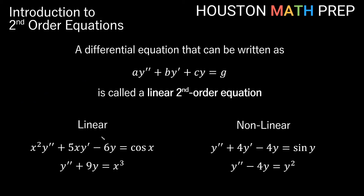Here we have a couple of examples and non-examples of linear second order equations. In the first example, a is x squared, b is 5x, c is negative 6, and g is cosine x — all functions of at most x. In the second example, a is 1, b is actually 0 (no y prime term), c is 9, and g is x cubed.